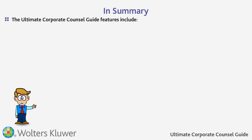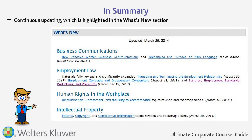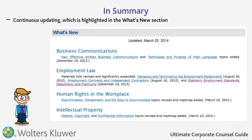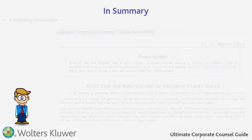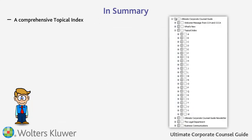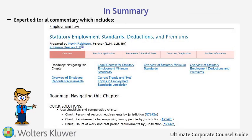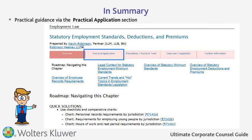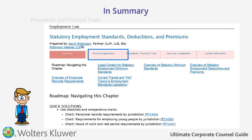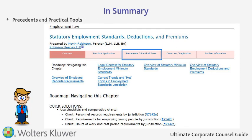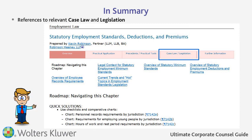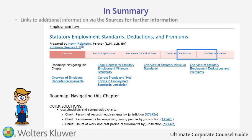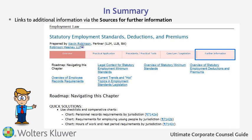The Ultimate Corporate Counsel Guide features include Continuous Updating highlighted in the What's New section for CCH Online users, a Monthly Newsletter, a Comprehensive Topical Index, and Expert Editorial Commentary which for each topic includes an Overview section, Practical Guidance via the Practical Application section, Precedents and Practical Tools, References to relevant case law and legislation, and links to additional information via the sources for further information.